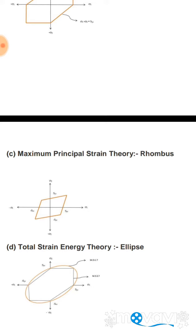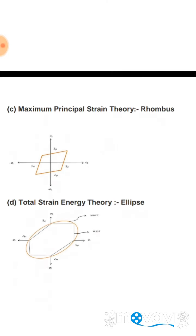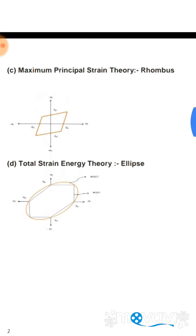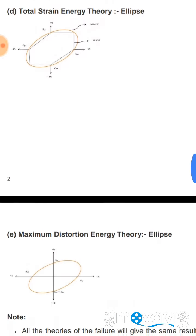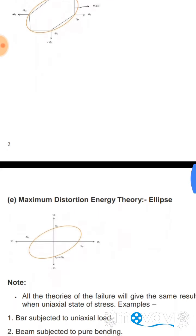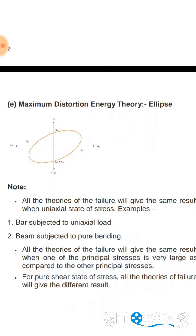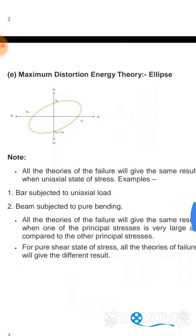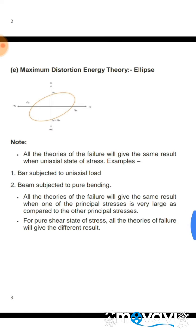Note: All the theories of failure will give the same result under a uniaxial state of stress. Examples: 1) A bar subjected to uniaxial load. 2) A beam subjected to pure bending. Also, all the theories of failure will give the same result when one of the principal stresses is very large as compared to the other principal stresses.